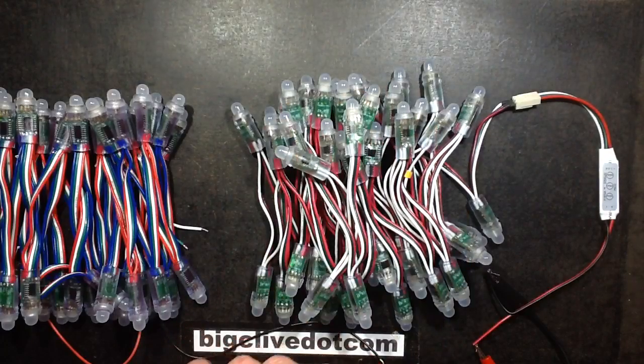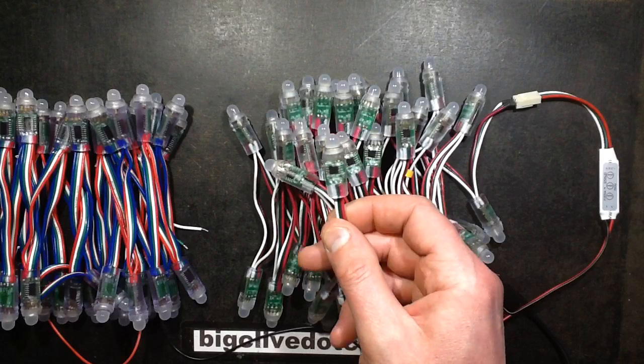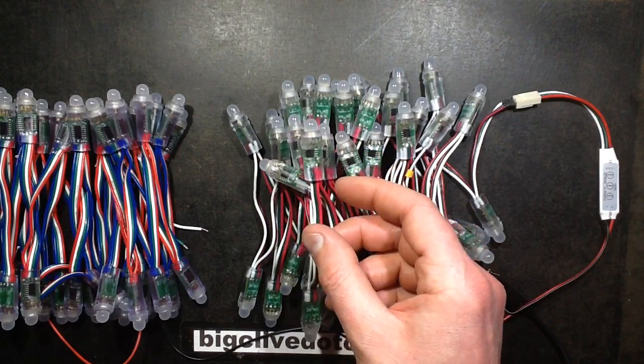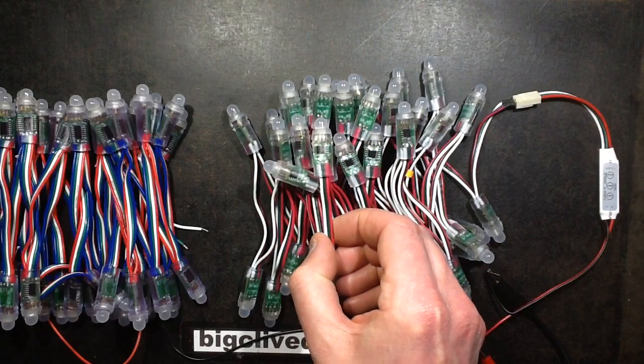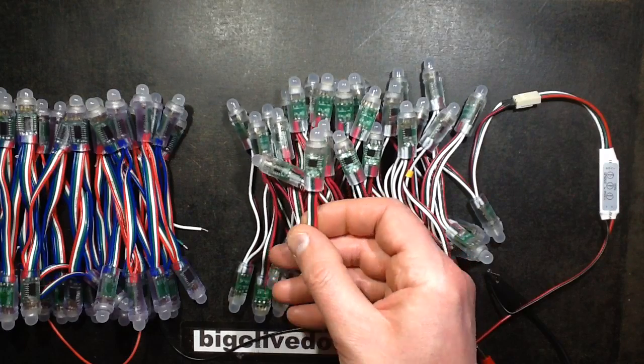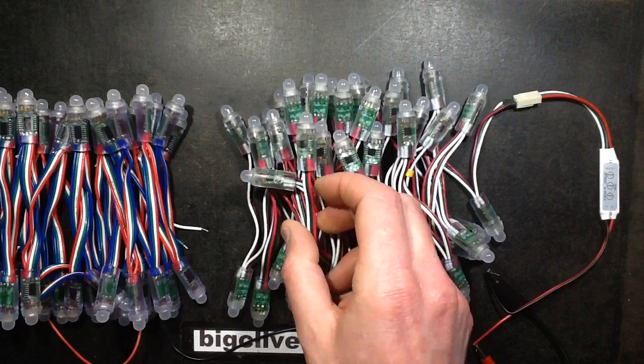Once you've started sending data out to this string, you kind of can't stop - it's quite demanding, it wants all the data at once. You send it out as a series of logic transitions where a short high state is a 0 and a long high state is a 1, I think.